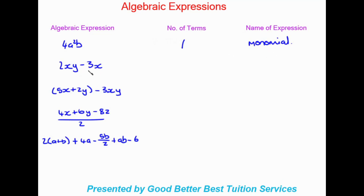Looking at the next expression, we have 2xy minus 3x. We can see there is a minus sign in between the two, so we have two terms in this expression, and what we call that is a binomial — 'bi' for two.